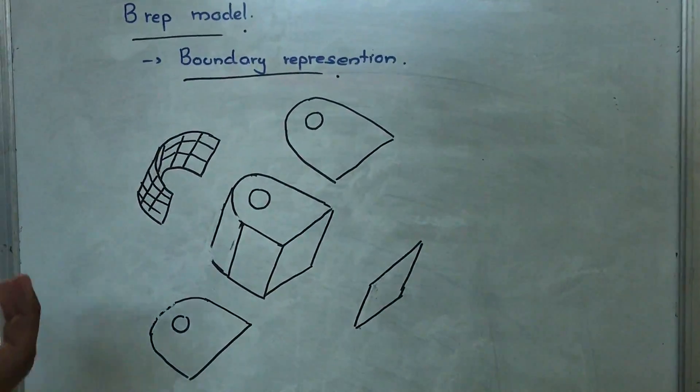And now these geometric entities when you are looking, this face is called a surface by geometric name. This is a surface but by topological name this is a face.